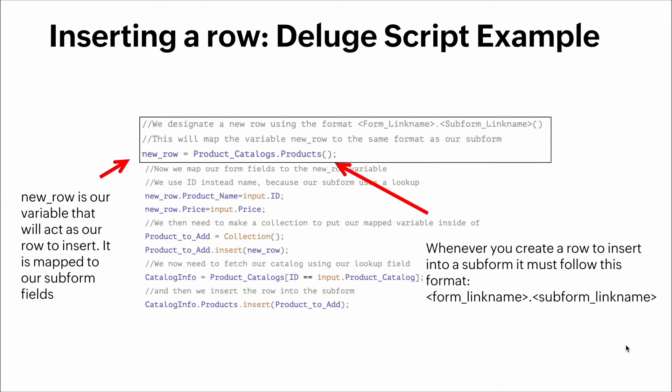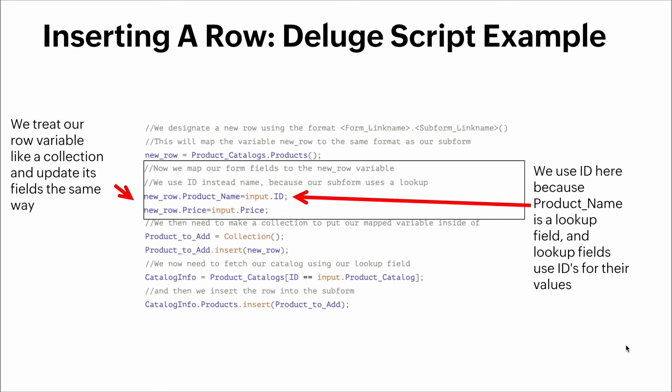Here's the Deluge script. The `newRow` variable will act as a row to insert — it is mapped to our subform fields. Whenever you create a row to insert into a subform you must follow this format: `form_link_name.subform_link_name`. We treat the row variable like a collection and update its fields the same way.